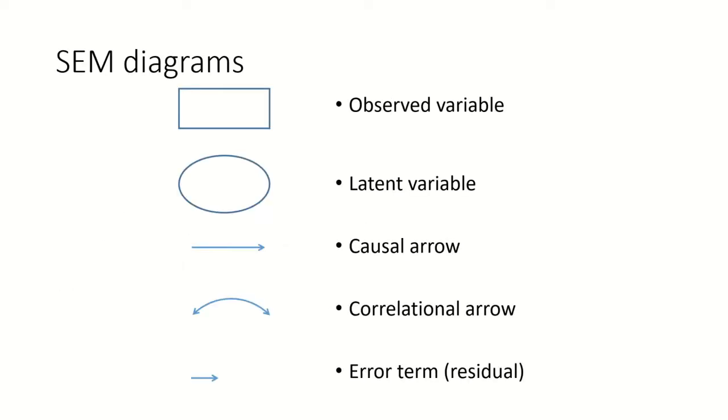So if we want to draw a structural equation model, so a confirmatory factor model or any kind of other model, we need to tell the reader or we need to visualize it in some way that others understand what we're using. So if we observe a variable, so we measure something directly, we typically put it into a square like this. If we infer a latent variable through, for example, a number of observed variables, we typically put it into a little oval or circle.